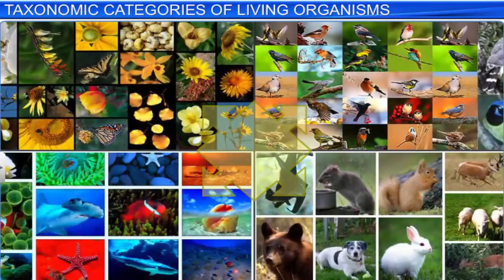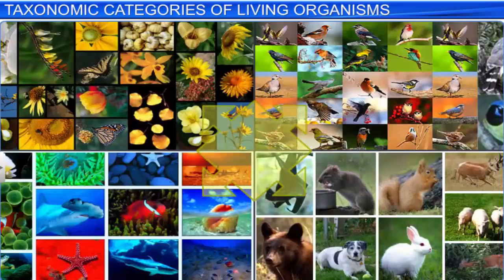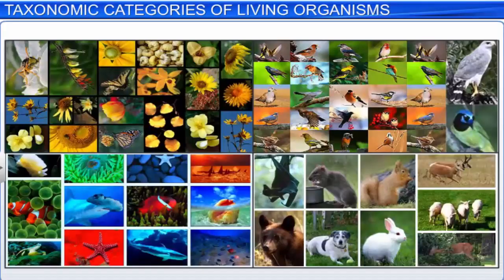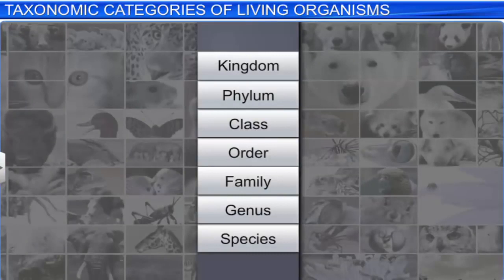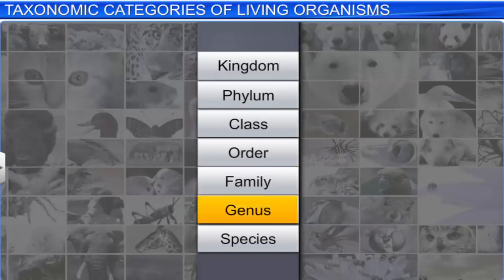Although the classification of living organisms seems difficult, you need to have a good knowledge of the characters of an individual organism or a group of organisms to classify them. This also helps you identify the similarities and dissimilarities among the same and different kinds of individual organisms. Organisms are classified using common categories such as kingdom, phylum or division, class, order, family, genus, and species. These taxonomic categories are also known as broad categories.